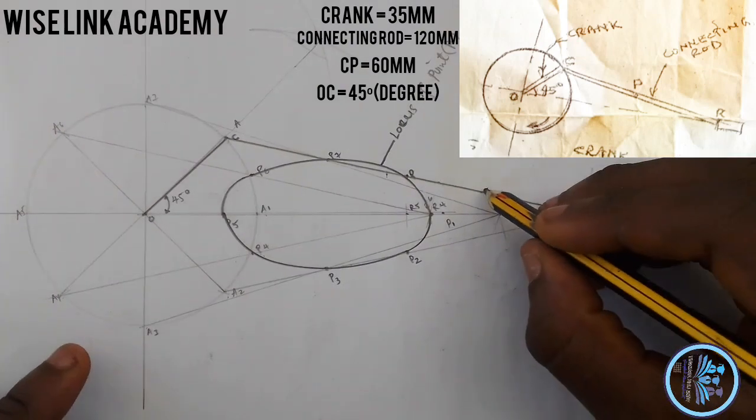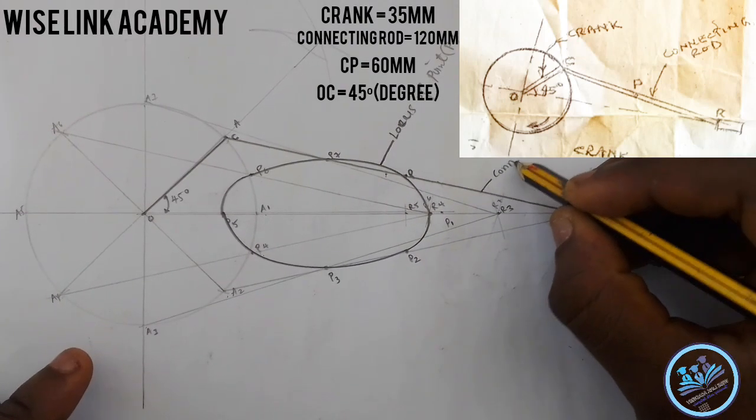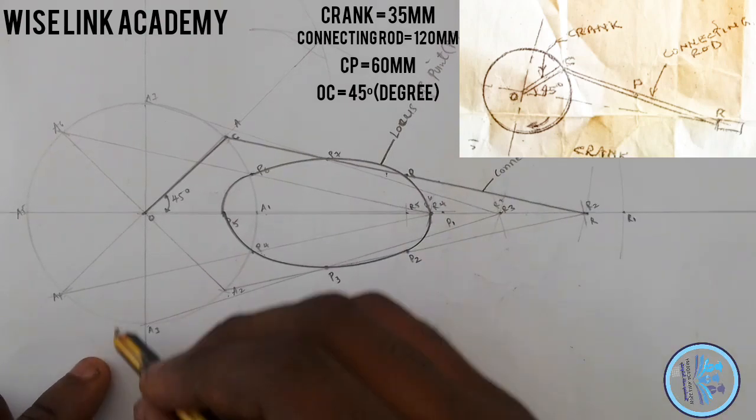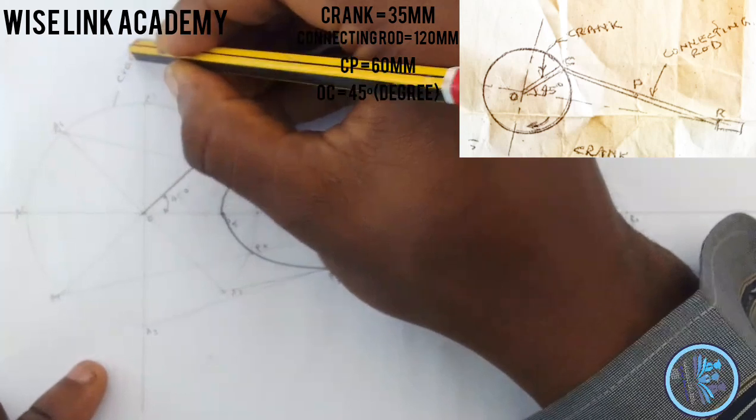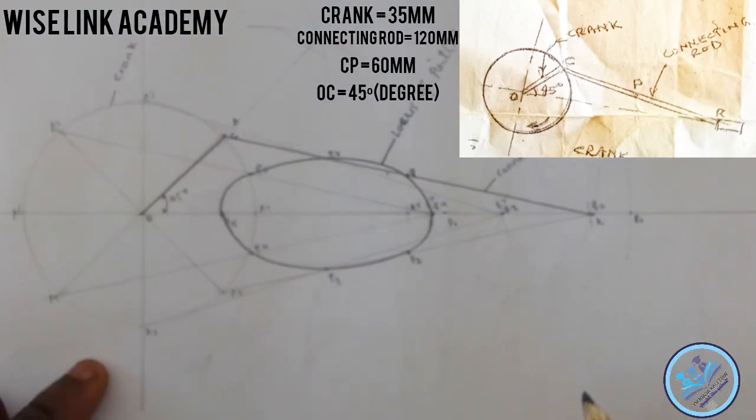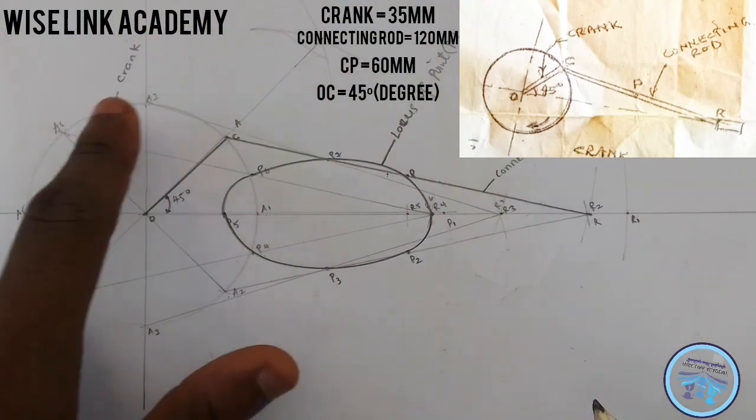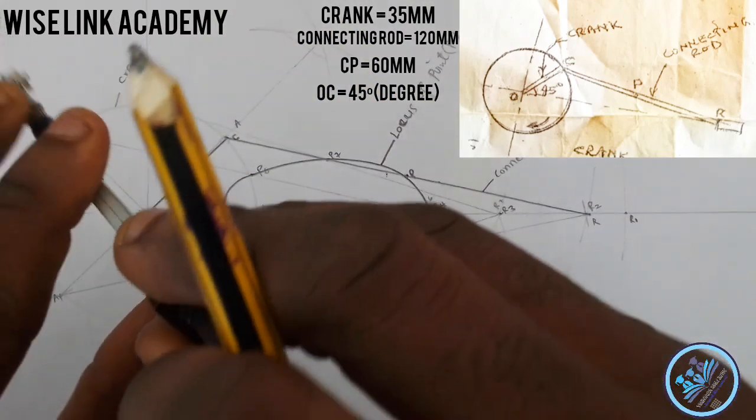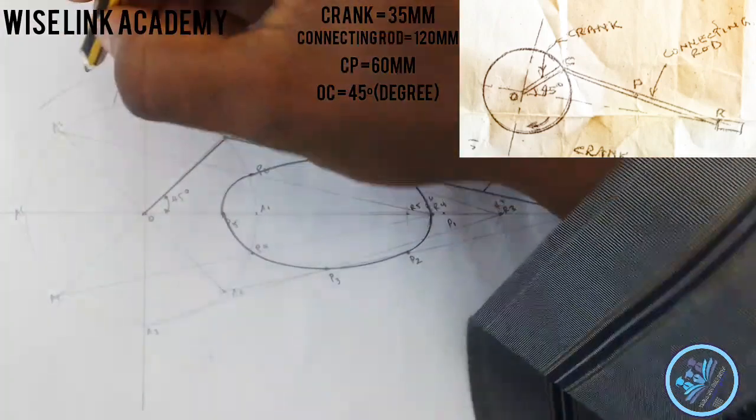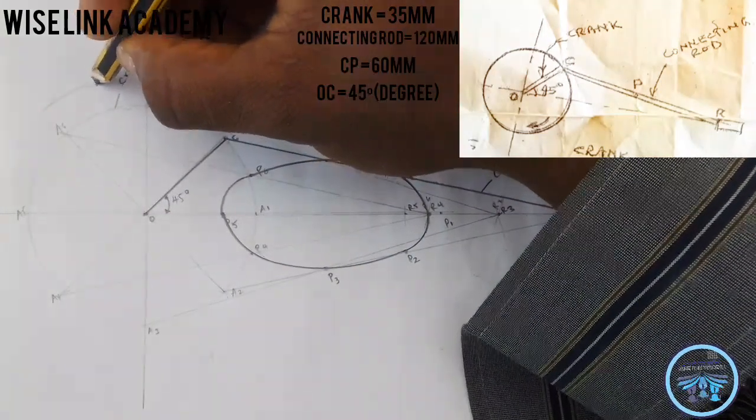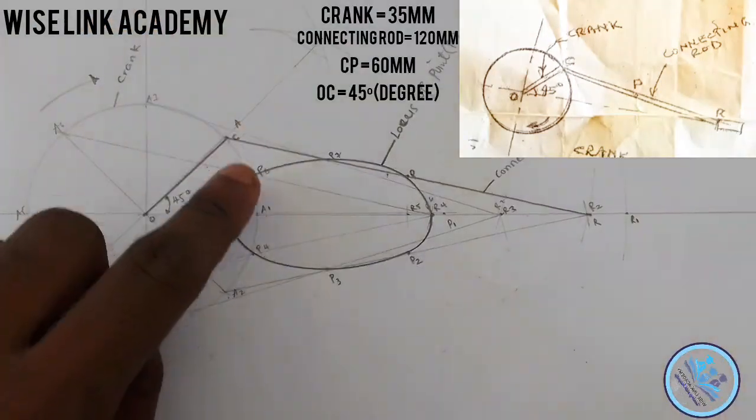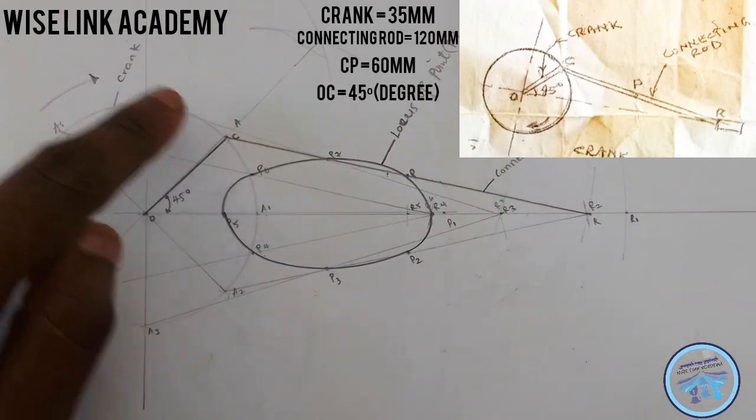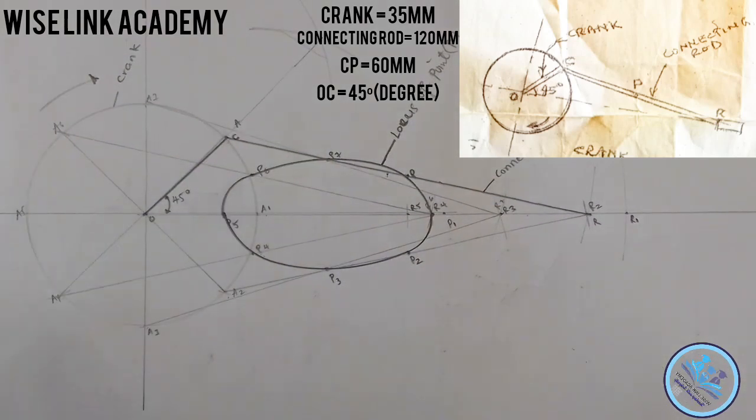This is my connecting rod, and this is my crank. I have moved in a clockwise direction. As I said earlier, I have moved in a clockwise manner. Because this is my A, A1, A2. If I move clockwise, here will be A, A1, A2. If I move backward, that's counterclockwise. Forward is clockwise.